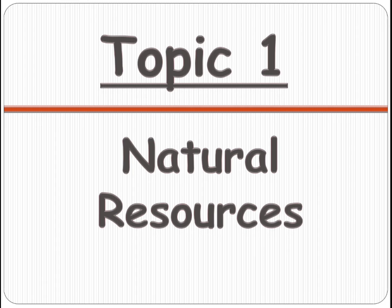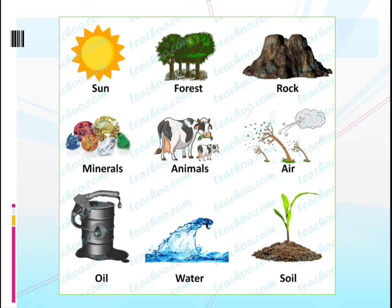What do you mean by natural resource? The things which we get from nature are called natural resources. That means they are not man-made — they come from nature. These natural resources are very useful to us. For example, the sun, forest, rocks, minerals, animals, air, oil, water, and plants — all these are natural resources. None of them are man-made; we get all these things from nature.